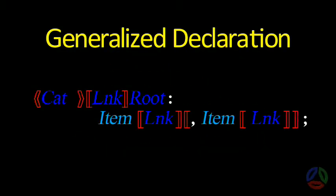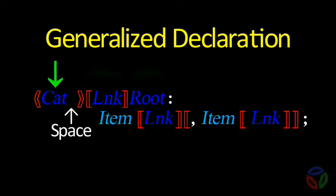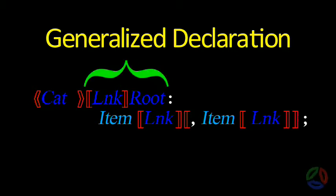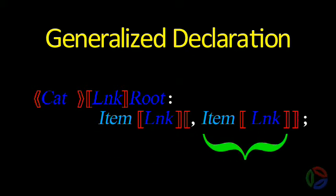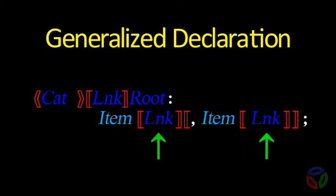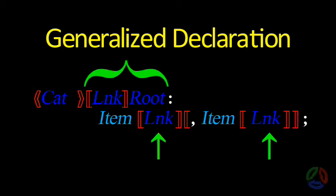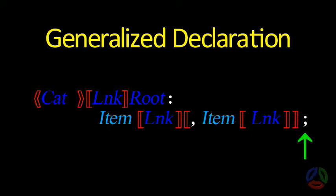Let's now look at a generalized declaration of an item in Phi. This form is used in global and local declarations. The item's category appears first — when present, this is usually a keyword. Next is the shared type, which consists of zero or more linkages and a root type. This shared type information is followed by a colon. Following the colon comes a list of one or more item names being declared, separated by commas. Each item can have additional linkages unique to itself, but they all share the common type. The list of items and the declaration statement itself is terminated with a semicolon.